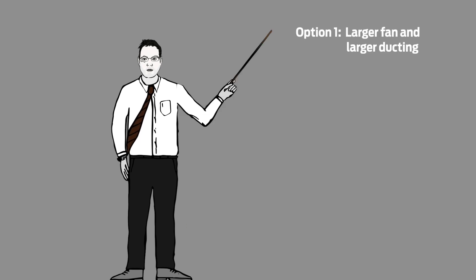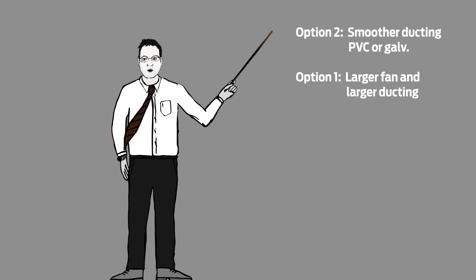We can go up a fan size if the 8 metre run is fixed, which will mean larger ducting. A simpler option that might not need any additional rework to provide enough room is to go to smoother ducting, for example PVC or galve.